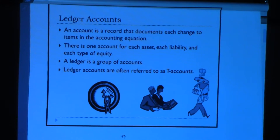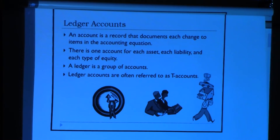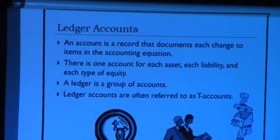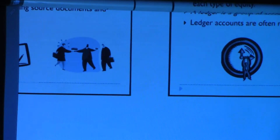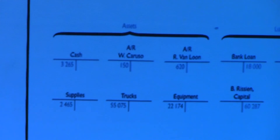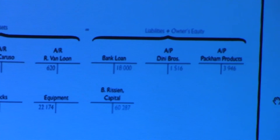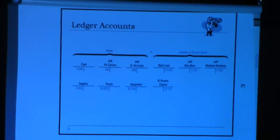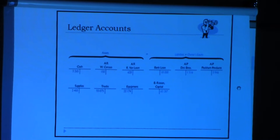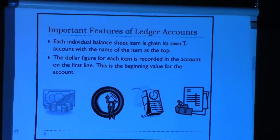That brings us to ledger accounts. We briefly talked about ledger accounts — a ledger is a record of any and all activities happening in a particular account. For example, you have a set of asset accounts, a set of liability accounts, and so on. As a reminder, all assets are on the debit side as normal account balances, all liabilities are on the credit side, and all equities are on the credit side.